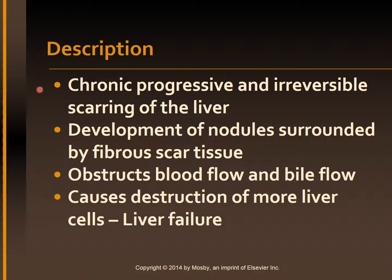Inflammation caused by toxins or disease results in extensive degeneration and destruction of hepatocytes. The overgrowth of new and fibrous connective tissue distorts the liver's normal lobular structure, resulting in lobules of irregular sizes and shape, with impeded blood flow and obstruction of biliary channels, resulting in bile stasis causing destruction of liver cells leading to liver failure. The development of cirrhosis is an insidious, prolonged course, usually after decades of chronic liver disease.